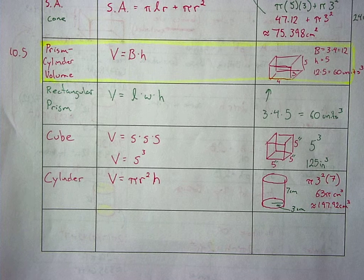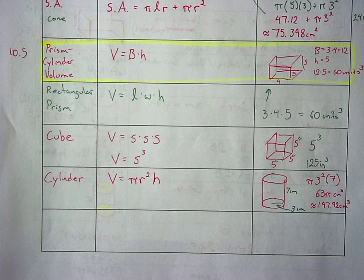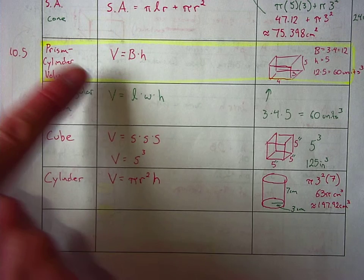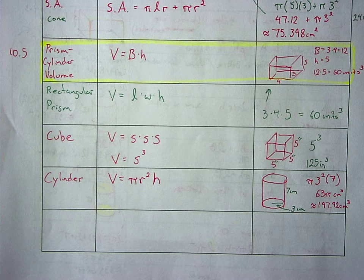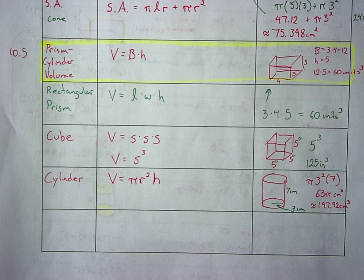But it's just a lot easier if you have a cube, a rectangular prism, or a cylinder to go directly to those formulas, which are all based off the first formula. So there are our formulas.